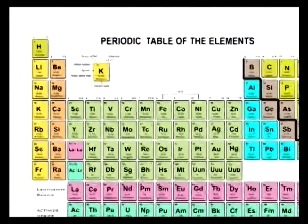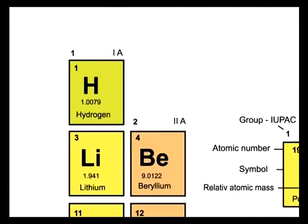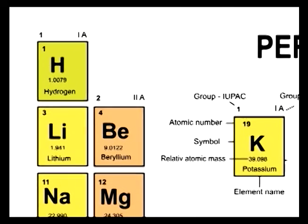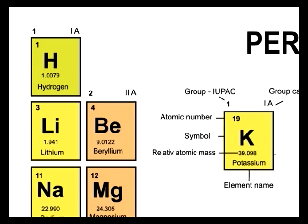Notice that every element has a chemical symbol in bold letters, usually right in the center. We've talked about this before: H for Hydrogen, O for Oxygen, He for Helium, things like that. This will come into play later when we talk about chemical compounds, because we'll be using these symbols like H2O, which we all know is water.